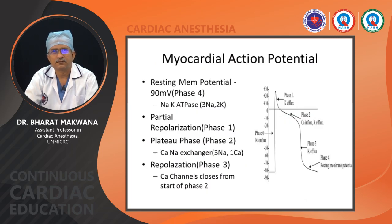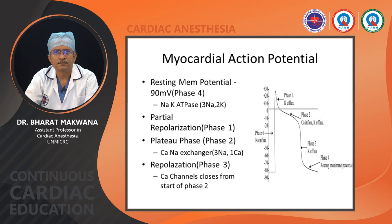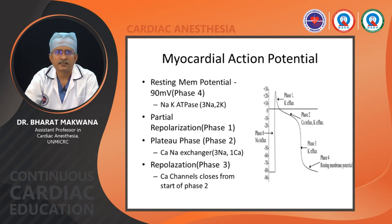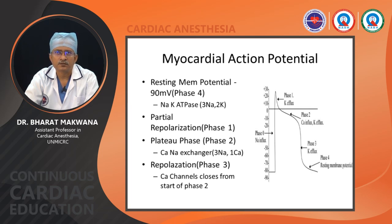The resting membrane potential of the myocardium is minus 90 millivolts, which is dependent on the sodium-potassium ATPase active pump. Phase zero is rapid sodium influx — after the membrane potential reaches minus 70 mV from resting, the myocardium gets excited and action potential reaches plus 30 mV. During this phase, action potential positivity is generated, and quickly after reaching the peak, sodium channels close and early repolarization begins.